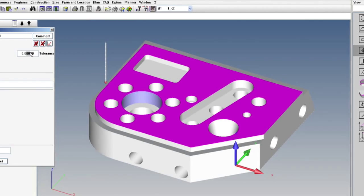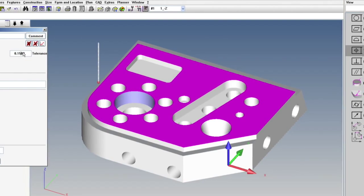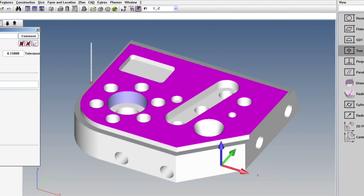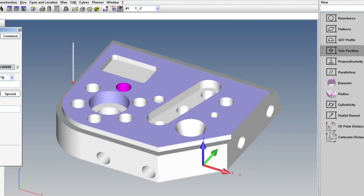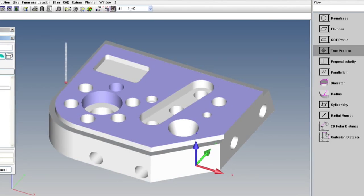Built-in intelligence automatically selects the appropriate algorithm for the feature or characteristic to be measured. Whether you need to meet ISO or ASME standards, Calypso can handle it with ease.